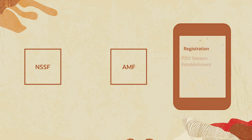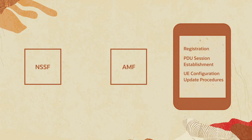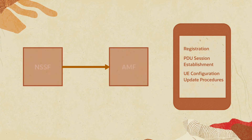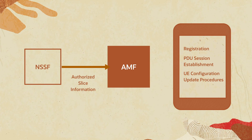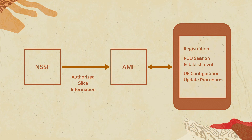During the registration, protocol data unit, PDU, session establishment, and UE configuration update procedures, NSSF applies the policies to assist AMF with authorized sliced information based on the UE's current location.